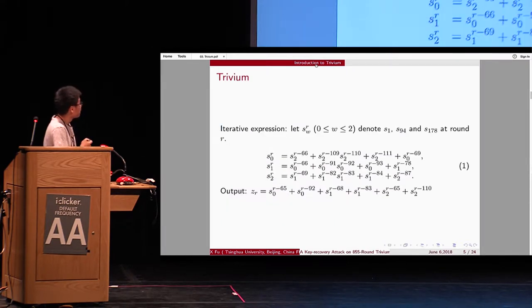So, we rewrite Trivium as an iteration expression form. So, at R round, the output is as follows.